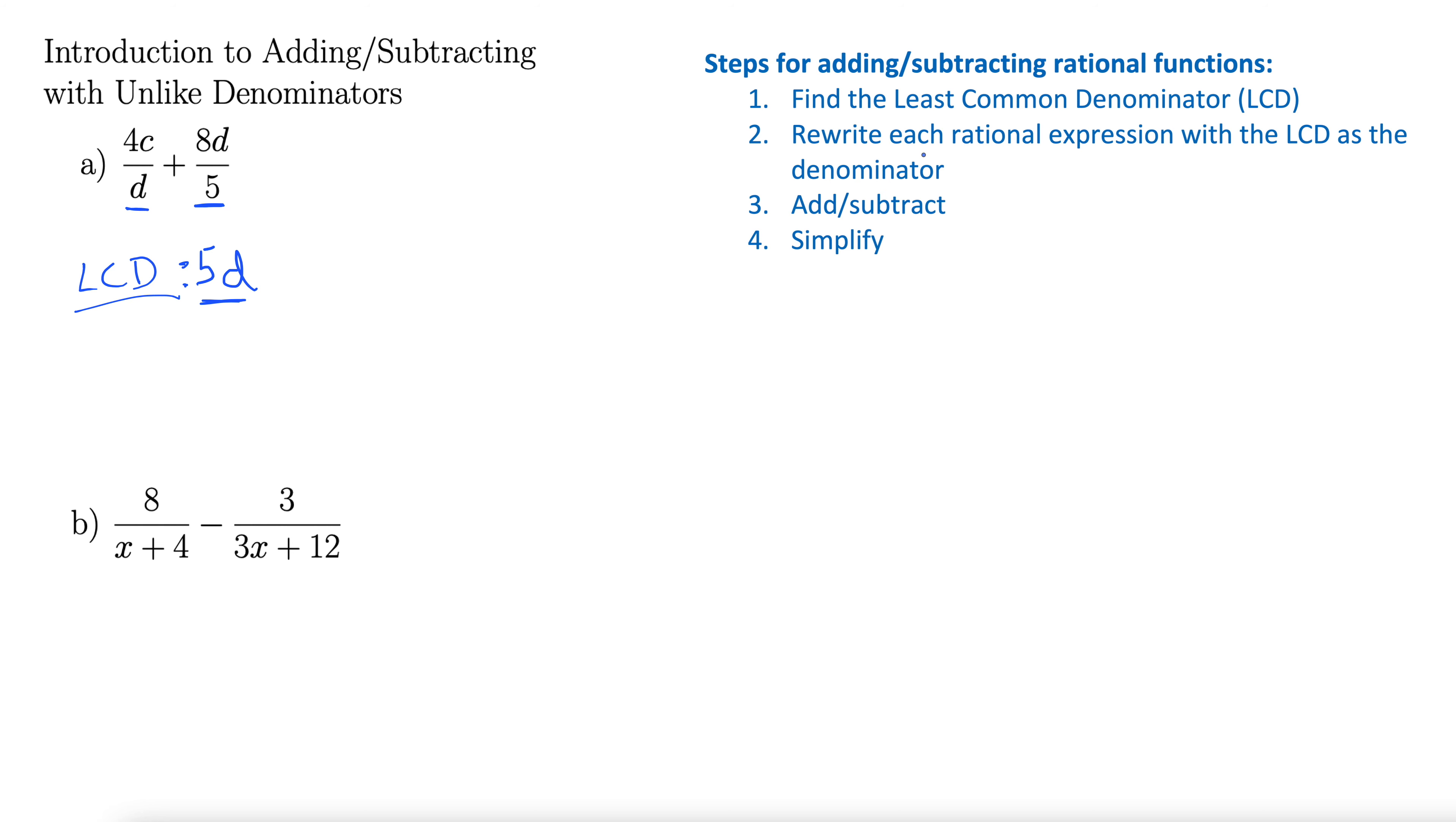Next we rewrite each rational expression with the LCD as the denominator. So what that means is we're going to take this thing, 4c over d plus 8d over 5, and we want to make this so that the LCD is 5d on each of these. So let's multiply this first one. We need a 5 down here, and so we multiply it by 5 over 5. Why would we put a 5 on the top as well? Well, we do that because we're really just multiplying by 1.